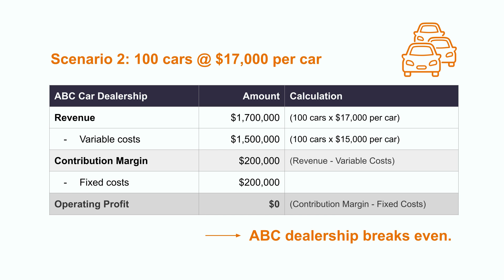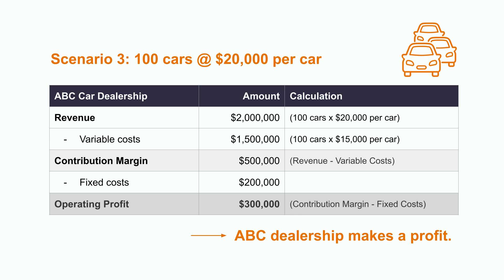The contribution margin of $2,000 per car times 100 cars equals $200,000. If the dealership sells 100 cars at a price of $20,000, the total sales revenue will be $2,000,000, resulting in a profit of $300,000. The variable cost per car is $15,000, for a total of $1,500,000. The fixed cost is $200,000, therefore the profit will be $300,000.